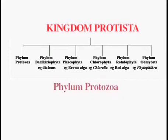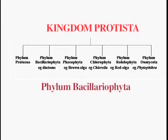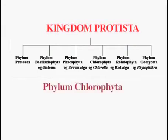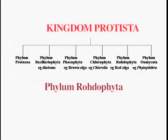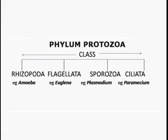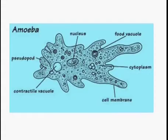Kingdom Protoctista includes six phyla: phylum Protozoa; phylum Bacillariophyta, which includes all the diatoms; phylum Phaeophyta, which includes the brown algae; phylum Chlorophyta; phylum Rhodophyta, which includes red algae; and phylum Oomycota, which includes Phytophthora. Phylum Protozoa is divided into four classes. Class Rhizopoda includes all those organisms which move about with the help of pseudopodia — for example, Amoeba.